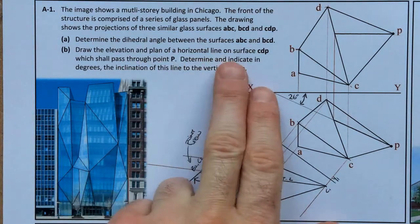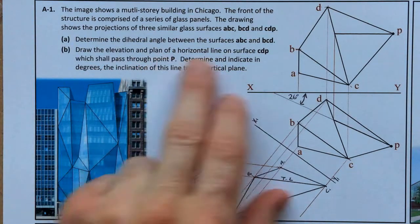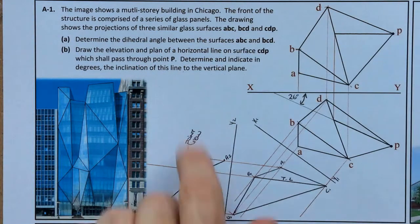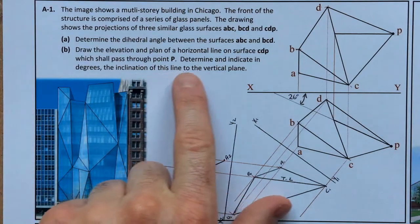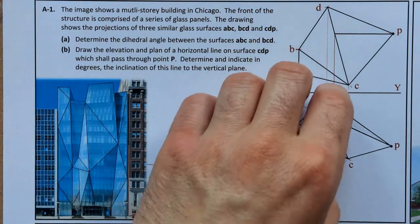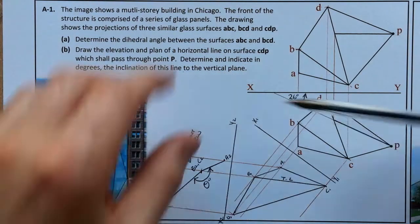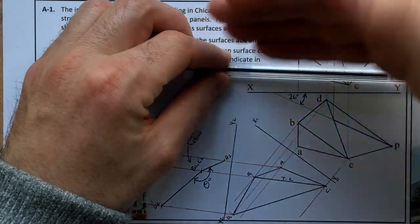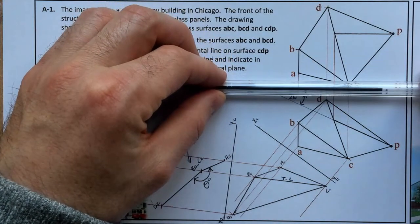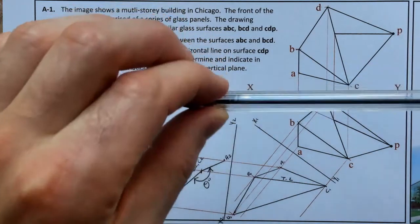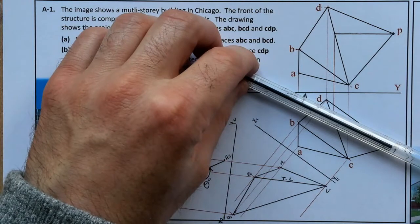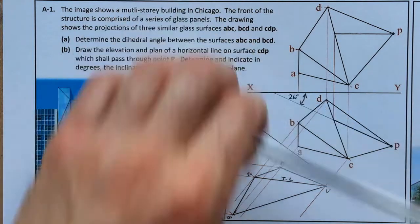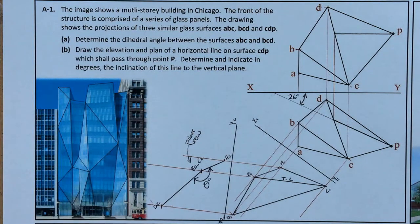So, draw the elevation and plan of the horizontal line passing through point P. In our plan view we see the vertical plane as the XY line — essentially the vertical plane standing upright — and that's the angle it makes against it. Not too hard to do, but understanding it is what's most important. So that's A1 done.